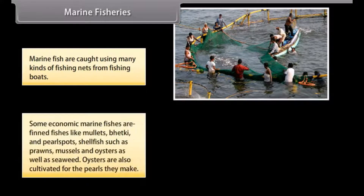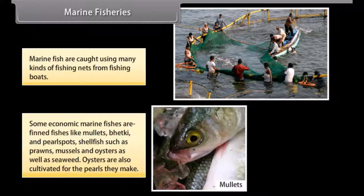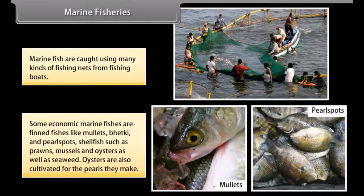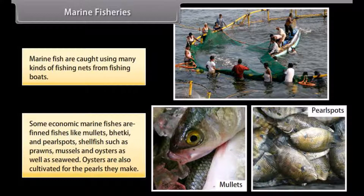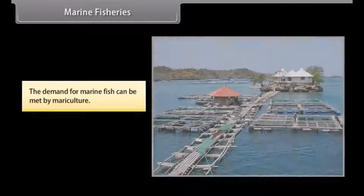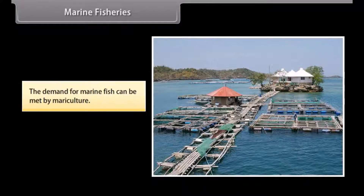Some economically important marine fishes are finned fishes like mullets, betki and pearl spots, and shellfish such as prawns, mussels and oysters, as well as seaweed. Oysters are also cultivated for the pearls they produce. The demand for marine fish can be met by mariculture.